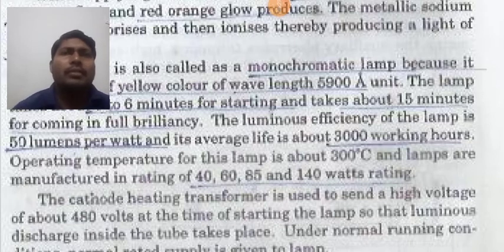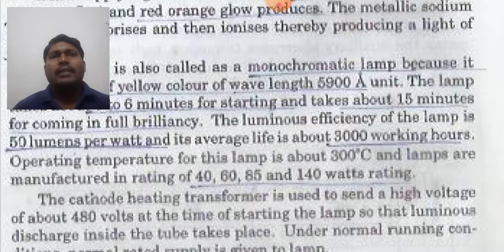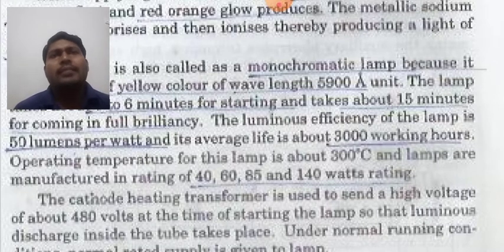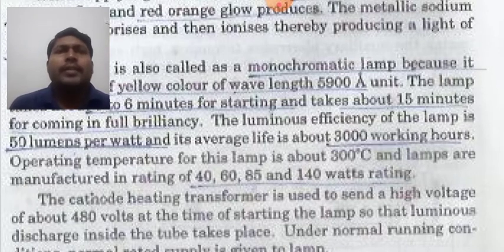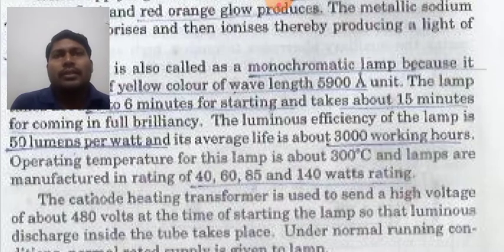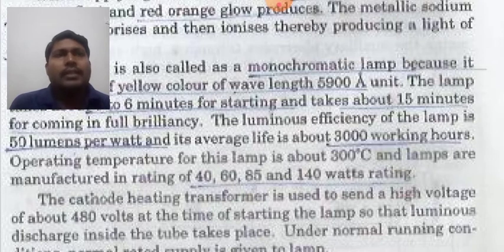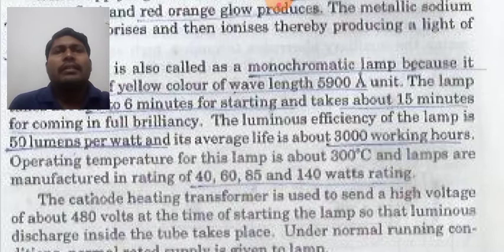The operating temperature of this lamp is about 300 degrees centigrade and lamps are manufactured in ratings of 40, 60, 80, and 140 watts. You can choose a particular wattage according to your requirement. The cathode heating transformer is used to send a high voltage of about 480 volts during starting, so that luminous discharge inside the tube takes place.